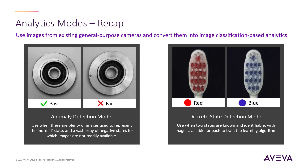Discrete state detection, on the other hand, is targeted for applications where there are two known states and images are available for both, and where you want the model to identify which one is presented — such as batch detection, or whether a hopper is full or empty.